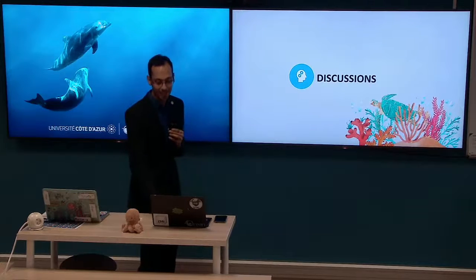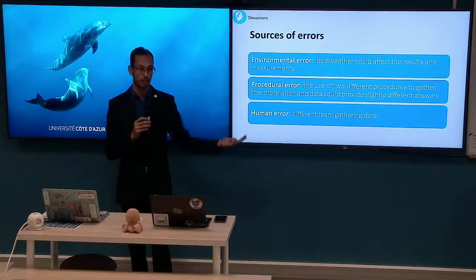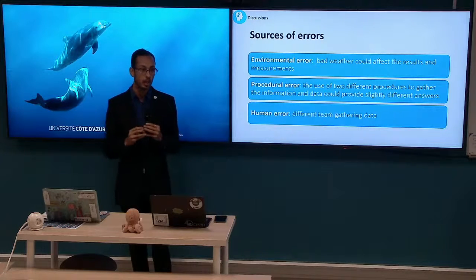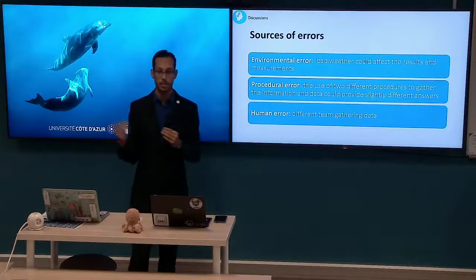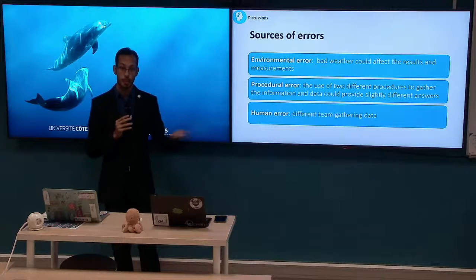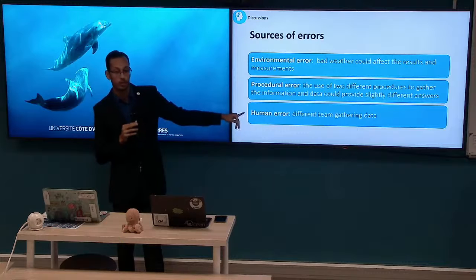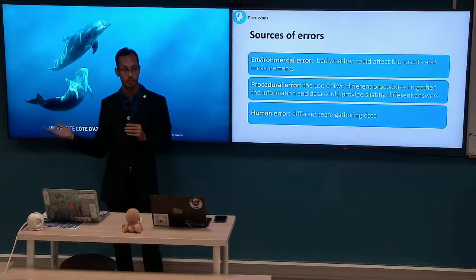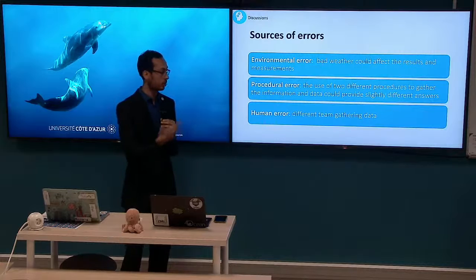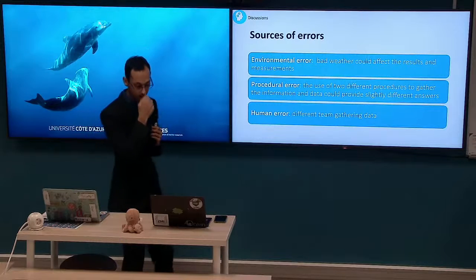Before discussing these results, we need to consider the sources of error: environmental, procedural, and human. Environmental error may come from weather conditions during 2019 and other years, which prevented proper site sampling. Procedural error may stem from changes in equipment over the years that affected sampling technique. Human error is also relevant as different sampling teams were used each year, though this is partially mitigated in the per-year correlation tests since they use ratios per year.